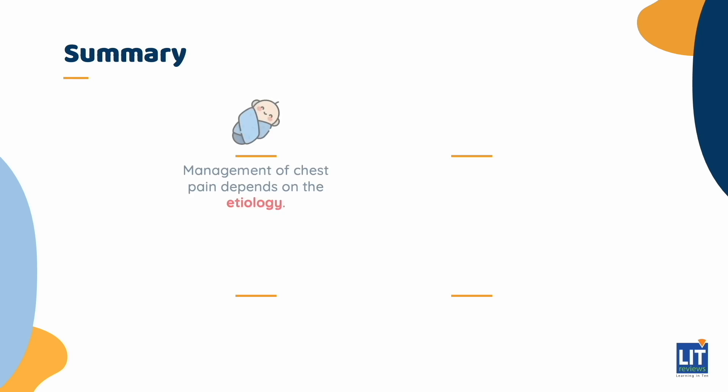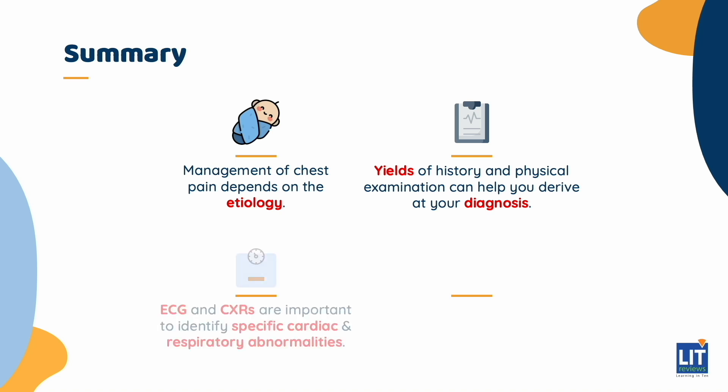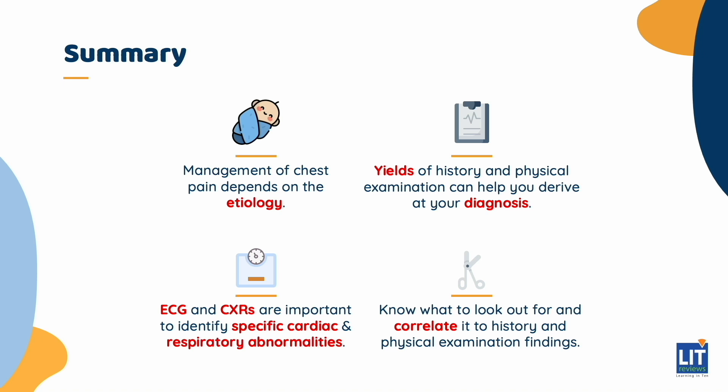In conclusion, the management of chest pain depends on the etiology. Look out for red flags when approaching a child with chest pain. Do not underestimate the value of a thorough history and physical examination, as they can help you derive your diagnosis. ECG and chest X-rays are important to identify specific cardiac and respiratory abnormalities, but you must know what to look out for and correlate these with your history and physical examination findings.